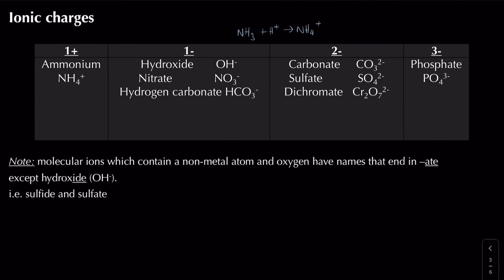Looking at 1 minus ions - hydroxide, nitrate and hydrogen carbonate. A key trend is that if a molecular ion contains more than one atom and is attached to oxygen - like nitrate, hydrogen carbonate, carbonate, sulphate, dichromate and phosphate - the name starts with the element and ends in '-ate' because it contains oxygen. For example, nitrogen gives 'nitr-' and it ends in '-ate' because there's at least one oxygen atom, giving us nitrate. This trend applies to all these molecular ions apart from hydroxide.